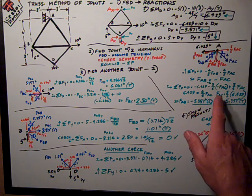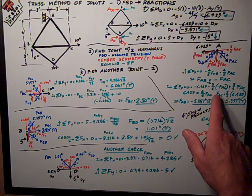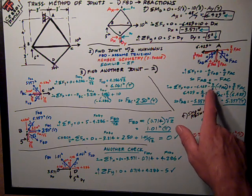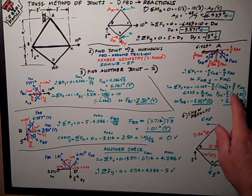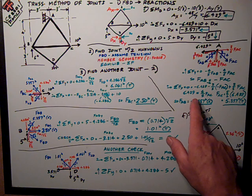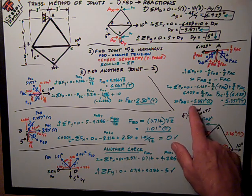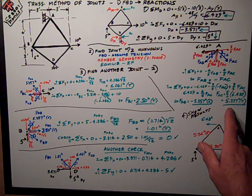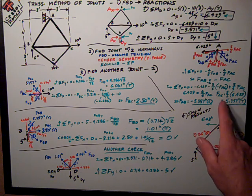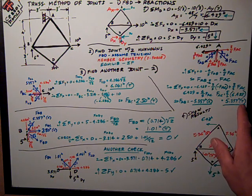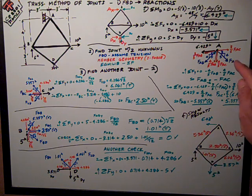And I get that positive 3 fifths FAC. Substituting that in for FAB, the negative FAC. The math works out to be this, so that FAC is 5.357, a positive number, which means it's tension. So FAC is tension.